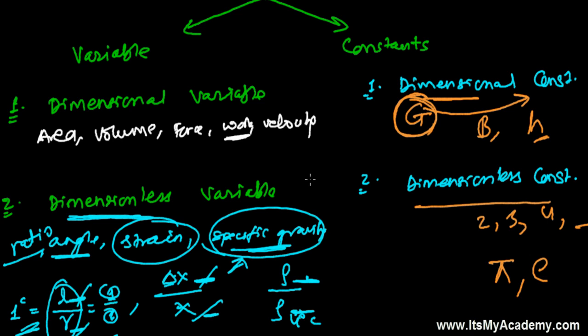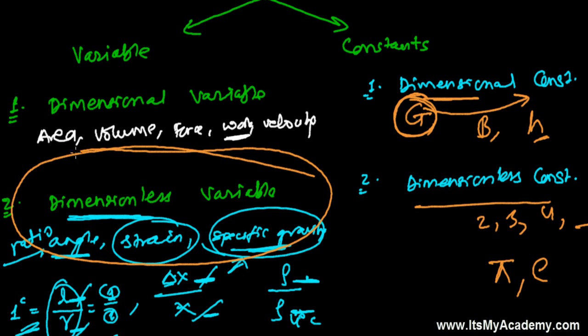In examinations, most questions come from this topic. The question may ask you to write two physical quantities that do not have any dimension, or to write physical quantities that have a unit but no dimension. For example, angle has a unit — radian or degree — but it does not have dimension. So be prepared to name such dimensionless variables.